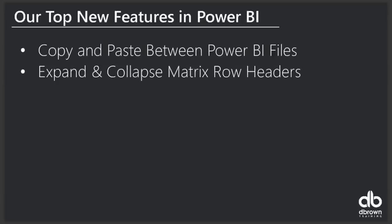Now we want to see the top new features in Power BI for November. The first one is that you can now copy and paste between Power BI files, which was previously unavailable. The second one is you can now expand and collapse matrix row headers. Let me see if I can quickly show how to do that — expand and collapse matrix row headers in Power BI.